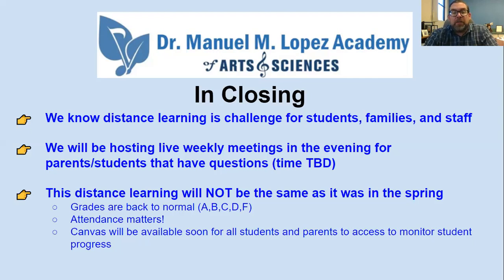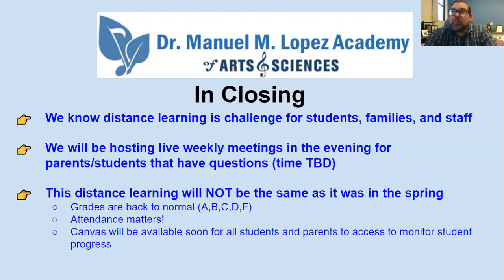The most important thing to point out is that this distance learning starting Wednesday, August 19th, is not the same as it was in the spring. We expect students to fully engage and have a full day's worth of work every single day. We are going back to traditional grading — no more credit or no credit. Students will receive normal grades: A, B, C, D, F. Attendance matters. School attendance is mandatory for anyone under 18 in California, and we have a lawful obligation to ensure all students attend regularly, including distance learning. Make sure your student is Zooming in every single day when they need to and completing assignments.